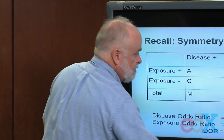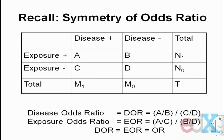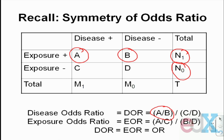Suppose you did a cohort study and displayed your results in a table like the one on the slides right now. You had N1 exposed people and N0 non-exposed people, followed forwards in time to see who developed disease. A developed disease among the exposed, B did not. C of the non-exposed developed the disease, D did not.